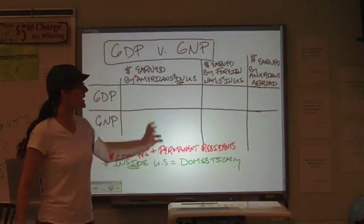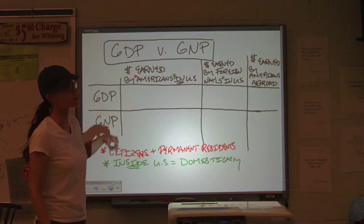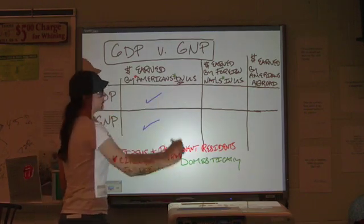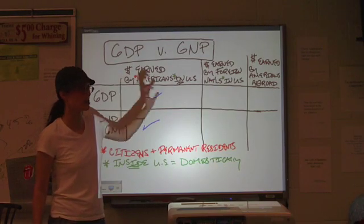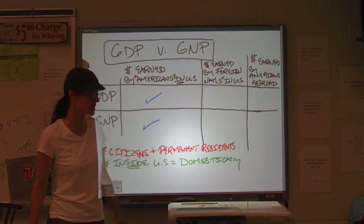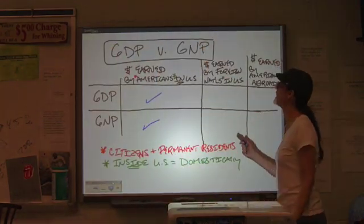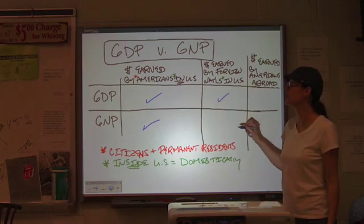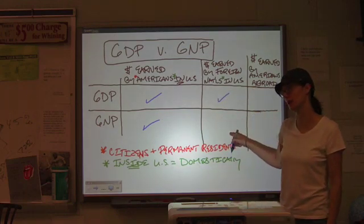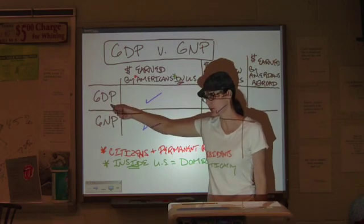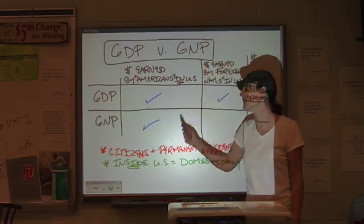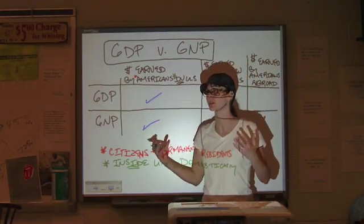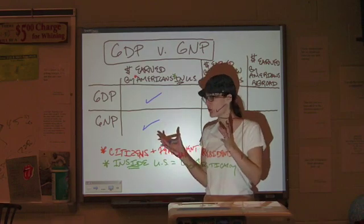The biggest component here is the first one. Money earned by Americans in the U.S. is included in both. Now, it's over here that we see a difference. Money earned by foreign nationals in the U.S. — it's earned in the U.S., so it's GDP. It's not GNP. Gross domestic product means things that are earned domestically. Gross national product means things earned by Americans. That's kind of a shorthand way to look at it.